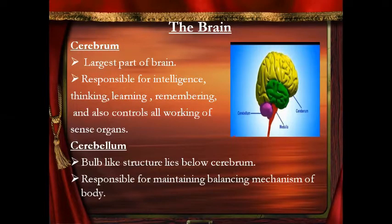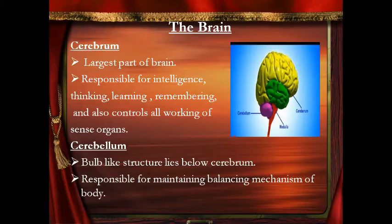The brain — the human brain is a very delicate organ and is present inside the bony structure called the skull. The human brain has three parts: the first part is the cerebrum, the second is cerebellum, and the third part is the brain stem or the medulla oblongata.